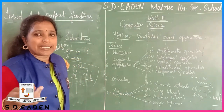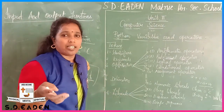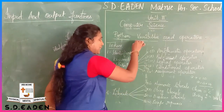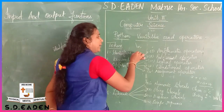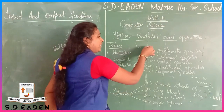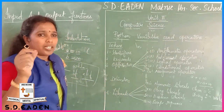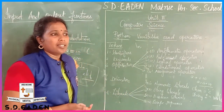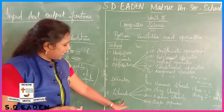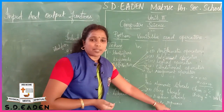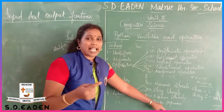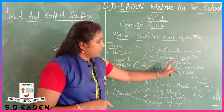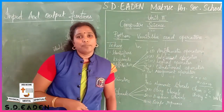Next is escape sequence. For example, backslash n gives a new line. When you run in a mode, it will display on a new line. Other escape sequences include backslash for bell. Okay, that's all. Okay, thank you.